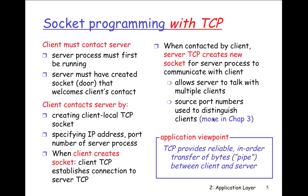For socket programming with TCP, the client must contact the server. The server must first be running, and the server must create a socket — a door that welcomes client contact. The server has to be up and running, ready to go. The server sits there waiting for incoming clients, whether using UDP or TCP. A background process can run on the phone waiting for chat communication. Creating a client involves specifying the IP address and port number of the server process.